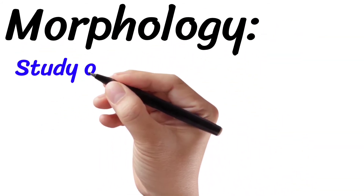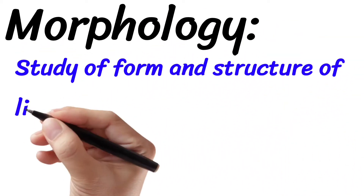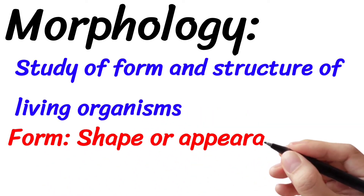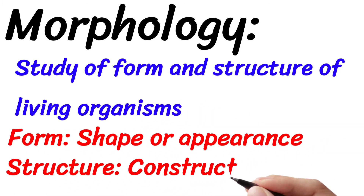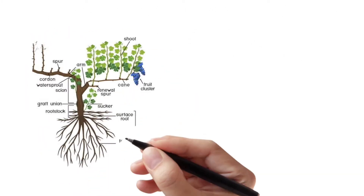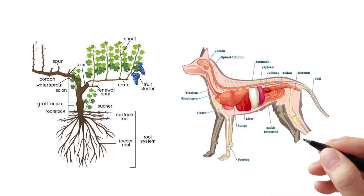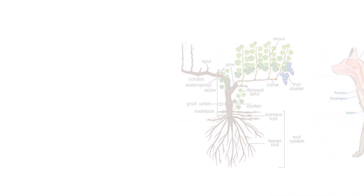Morphology. It is the study of form and structure of any living organism. Form means shape or appearance. Structure means construction. For example, if we study the structure of plants, animals, or any microorganism, it is said to be morphology.